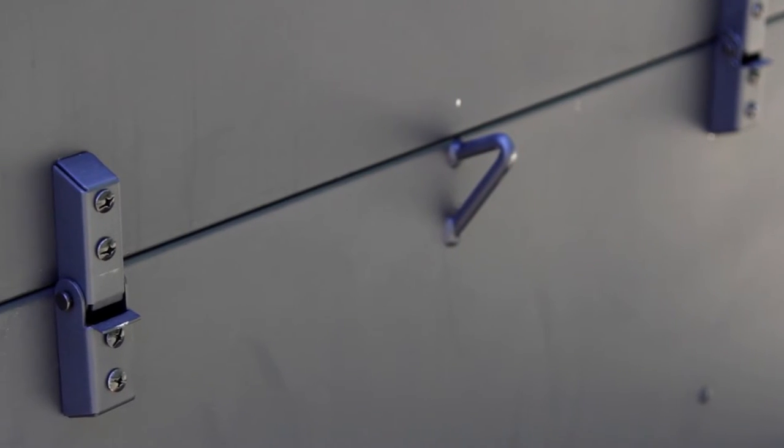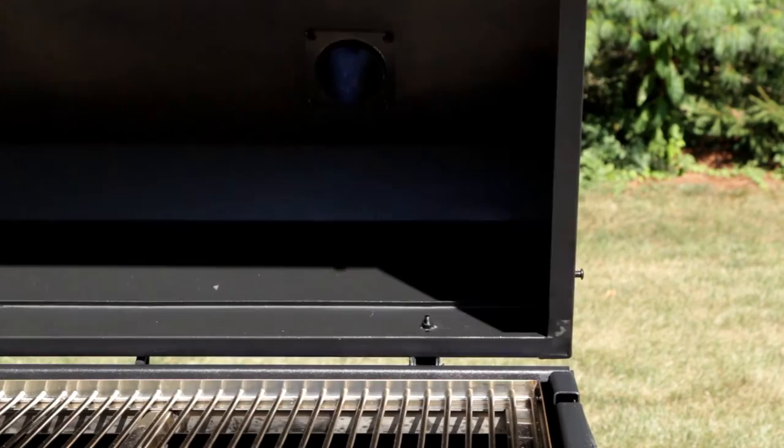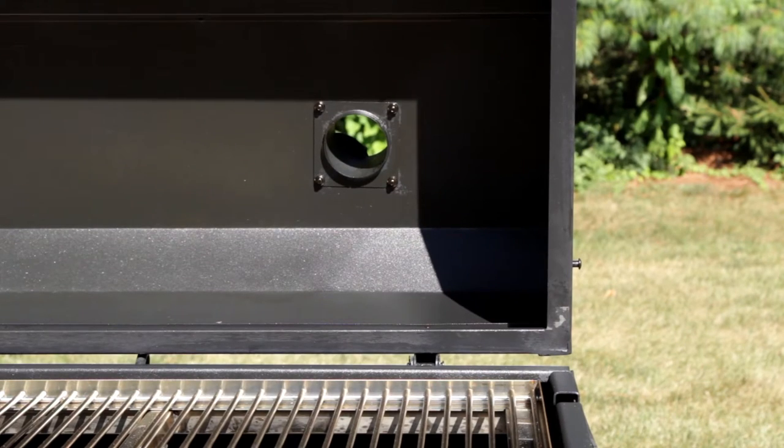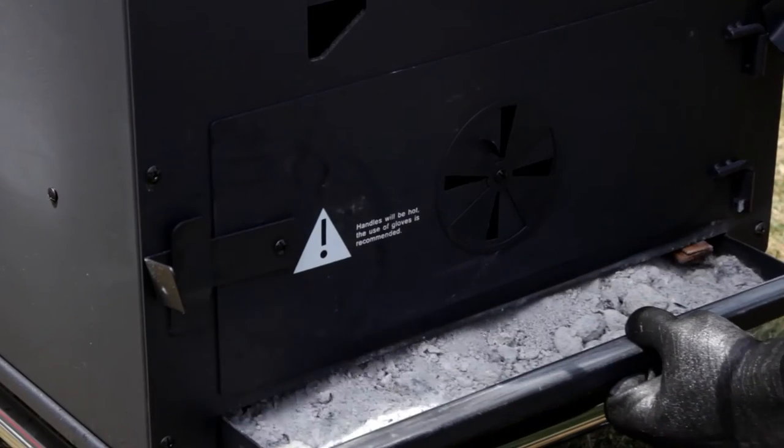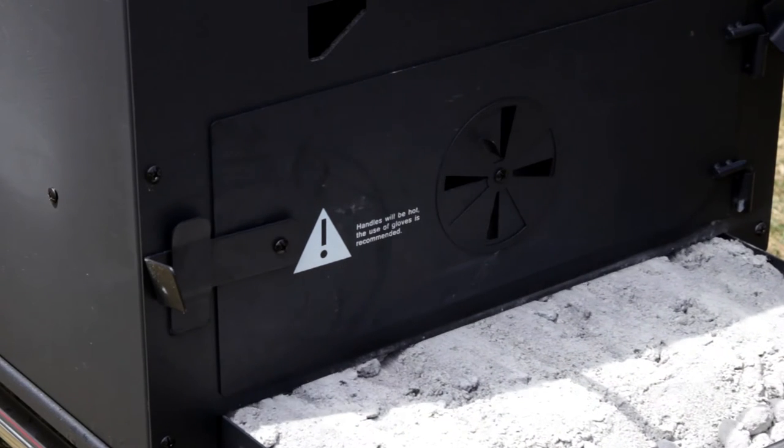Thanks to the convenient lid brackets, you won't have to worry about the lid tipping back too far as you load products. Both the cooking grates and the slide-out trays on the side of the unit can be removed when it's time for cleaning.